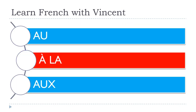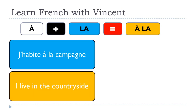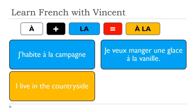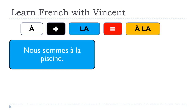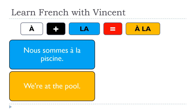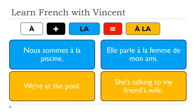Now let's see a few examples with À LA: 'J'habite à la campagne' — I live in the countryside. 'Je veux manger une glace à la vanille' — I want to eat vanilla ice cream. 'Nous sommes à la piscine' — We are at the swimming pool. 'Elle parle à la femme de mon amie' — She speaks to my friend's wife.